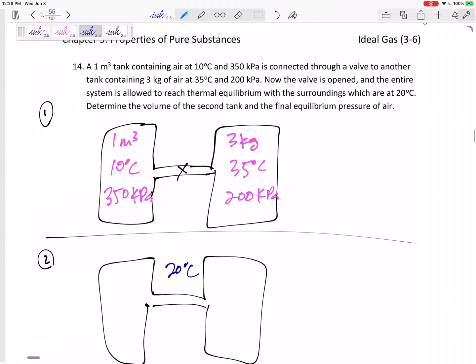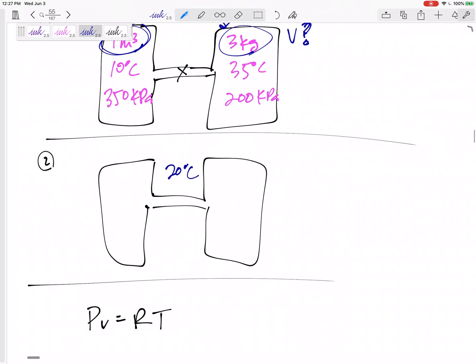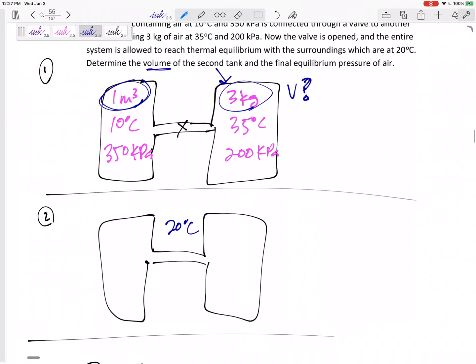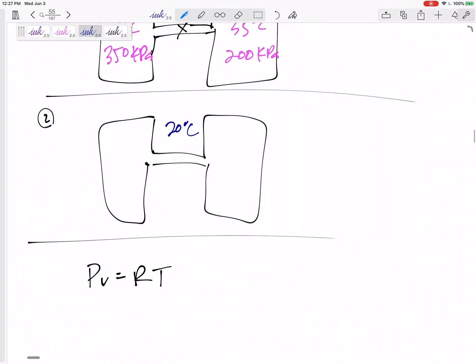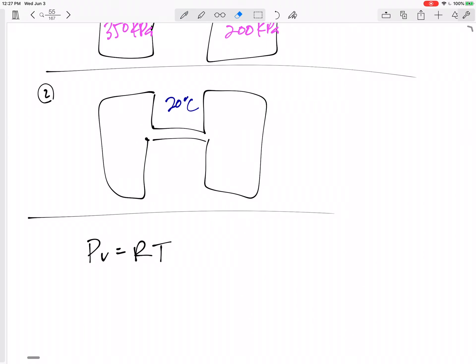Did you notice that it gave me the volume of this first one, but it didn't give me the volume of the second one. It gave me the mass of the second one. The second tank, I don't know the volume. Do you think we could get the volume from PV=RT? Yeah, I think we can. Instead of this lowercase v, we know that lowercase v is capital V over M.